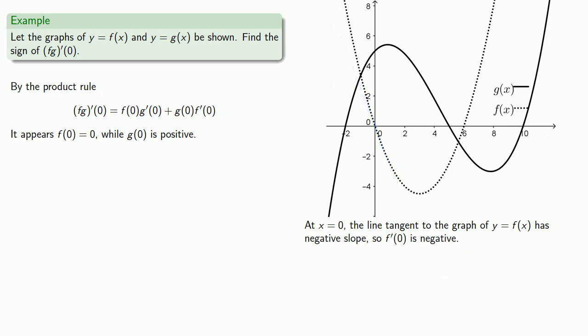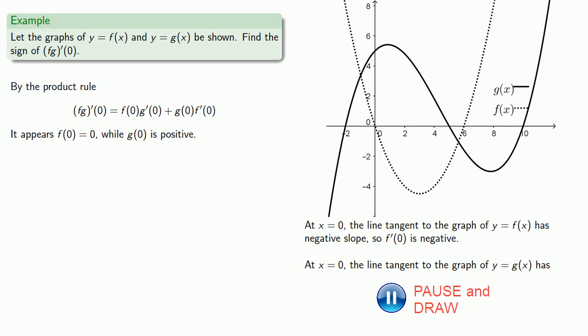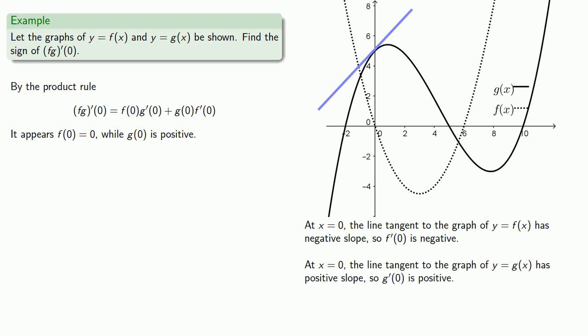Similarly, we want to find something about g prime of 0. That's the slope of the line tangent to the graph of y equals g of x where x equals 0. So let's sketch that tangent line, and it appears that this tangent line has a positive slope, so that tells us g prime of 0 is going to be positive.